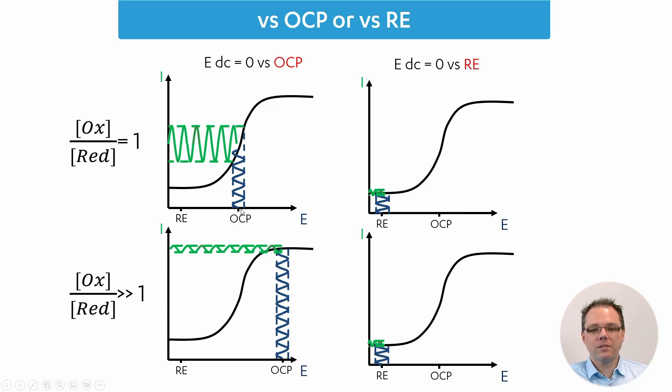We're performing our impedance measurement, applying an EDC that determines where on this axis we are, and then an EAC that determines how wide a window is for a sine wave. Usually we want small amplitudes to have a non-destructive technique and to be on an approximately linear relationship between current and potential. So a great place to perform your impedance spectroscopy is this very steep place of the curve, where a small sine wave potential gives you a rather high current wave back.